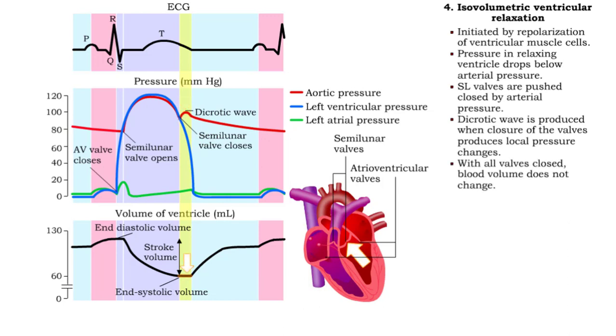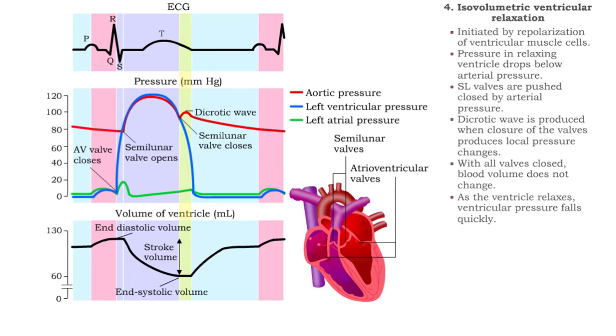With both semilunar and AV valves closed, blood volume does not change. This isovolumetric relaxation sees pressure drop quickly.